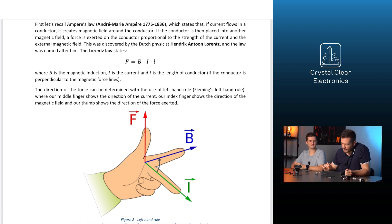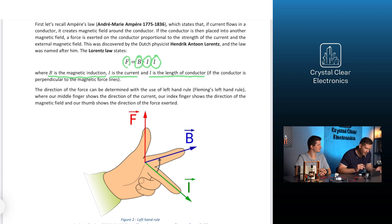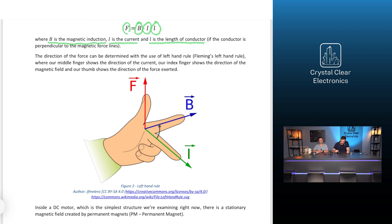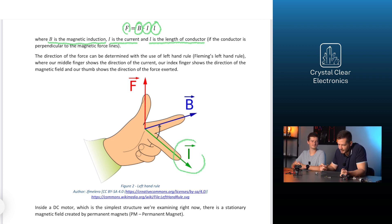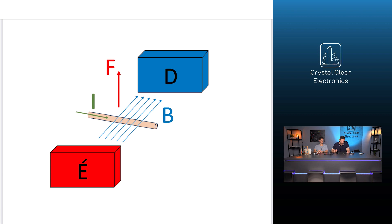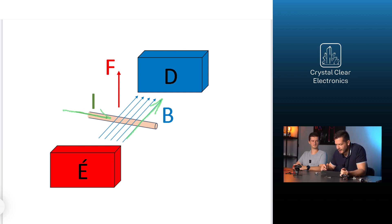The Lorentz force can be written as follows: the force F is equal to B times I times L, where B is the magnetic induction, I is the current, and L is the length of the conductor. This formula is true only if the conductor makes a perpendicular angle with the magnetic lines of force, also known as fluxes. The direction of the force can be determined using the left-hand rule, or Fleming's left-hand rule, where the middle finger shows the direction of the current, the index finger shows the direction of the magnetic field, and the thumb shows the direction of the force exerted. If we insert a current-carrying wire into a magnetic field, represented by an arrow pointing from north to south pole, we obtain a force perpendicular to both the magnetic flux and the wire.